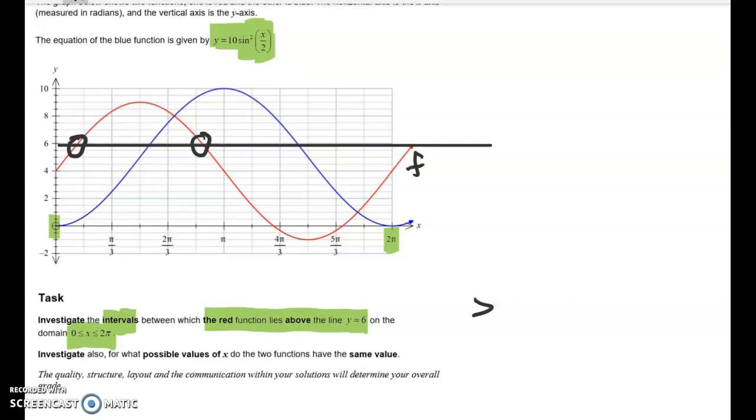So the first thing we're going to have to do is to find the equation of the red function. We'll call that f of x. And then we're going to solve the equation f of x is equal to 6, and we're going to find these two points. We're going to estimate them off our graph as well to check that we haven't mucked that up. And then we're going to write that interval, and that's probably all I'm going to get through in the first video.